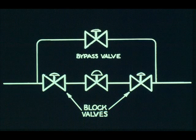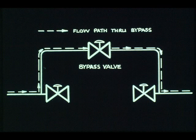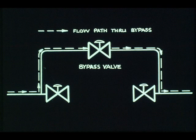Section 3.4 states that block and bypass valves shall be provided for all control and safety shutdown valves in accordance with Table 2. Table 2 covers the block valve and bypass valve size for a given mainline size. The function of the block and bypass valves is to permit removal of the control valve for maintenance without shutting down the unit.